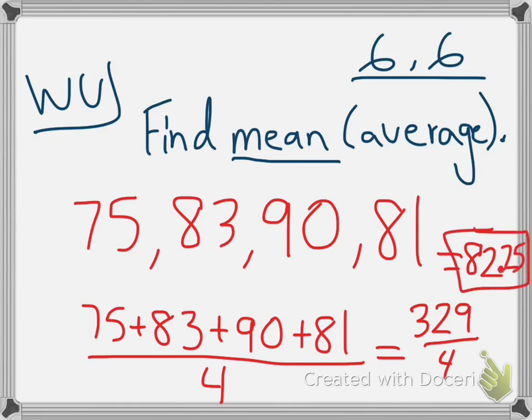So that means that our average test score for that semester, those four tests, would be 82.25. So if you were trying to boost your score for the class, you would have to score higher than the average to bring your average up.